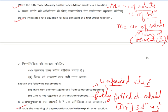Next question: what is the meaning of disproportionation? Write one example. A disproportionation reaction is a type of redox reaction in which one element simultaneously gets oxidized and gets reduced — both at the same time. That is known as a disproportionation reaction.